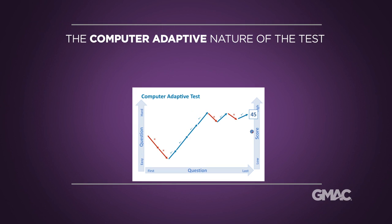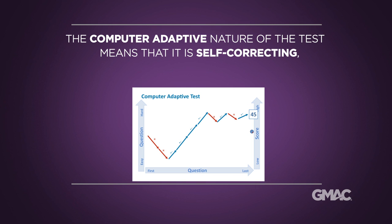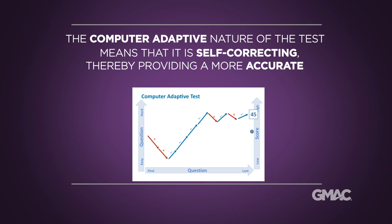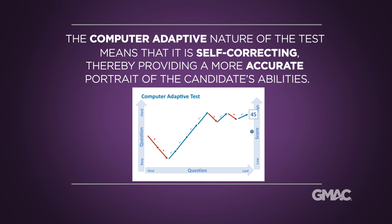What this means is each question is chosen based on the test taker's responses to the previous questions. After each question is answered, the score is updated. If the updated score is higher than the previous score, the next question will usually be more difficult than the previous question. Otherwise, the next question will be easier. The computer-adaptive nature of the test means that it is self-correcting, thereby providing a more accurate portrait of the candidate's abilities.